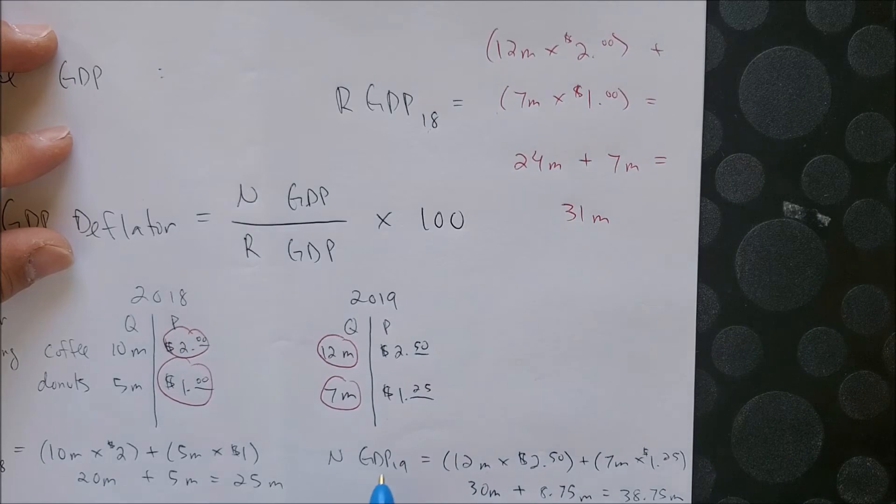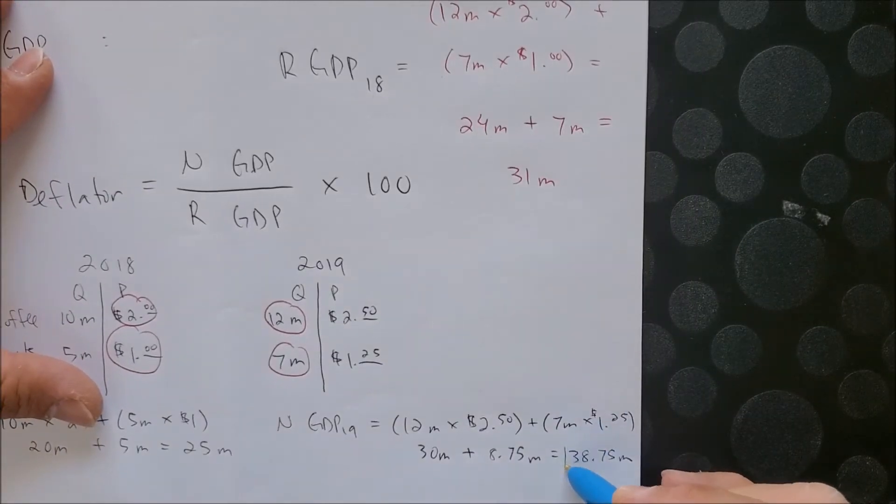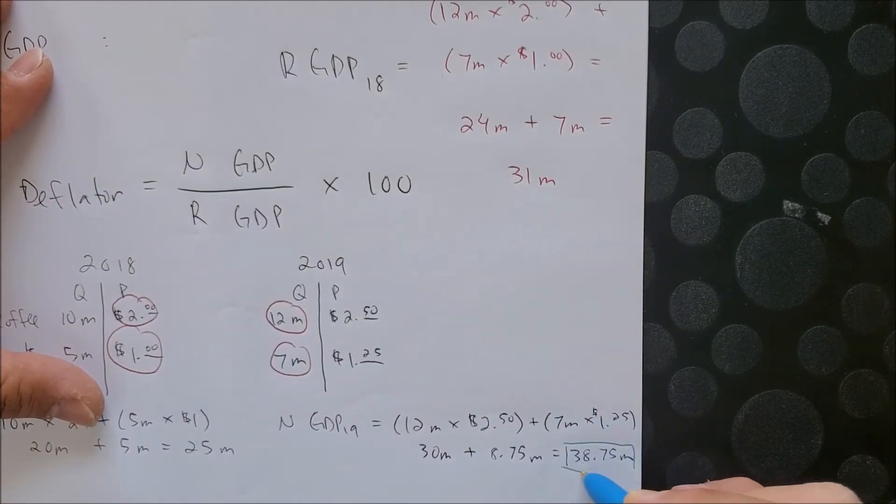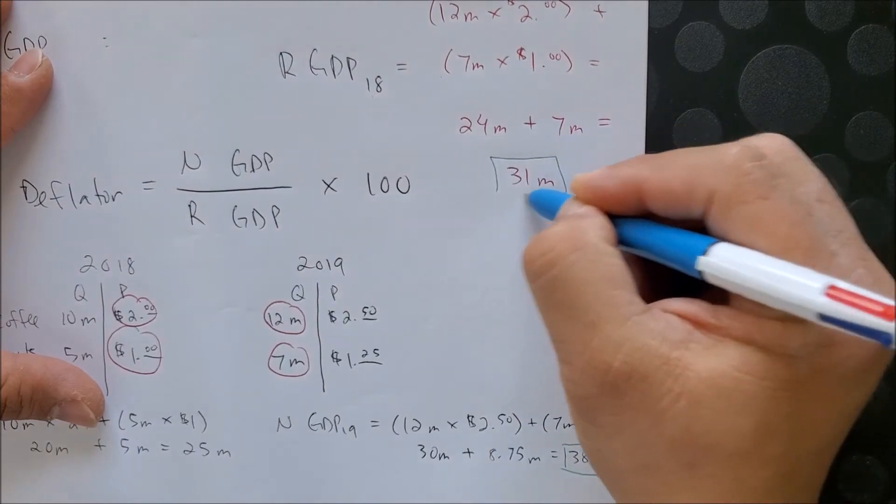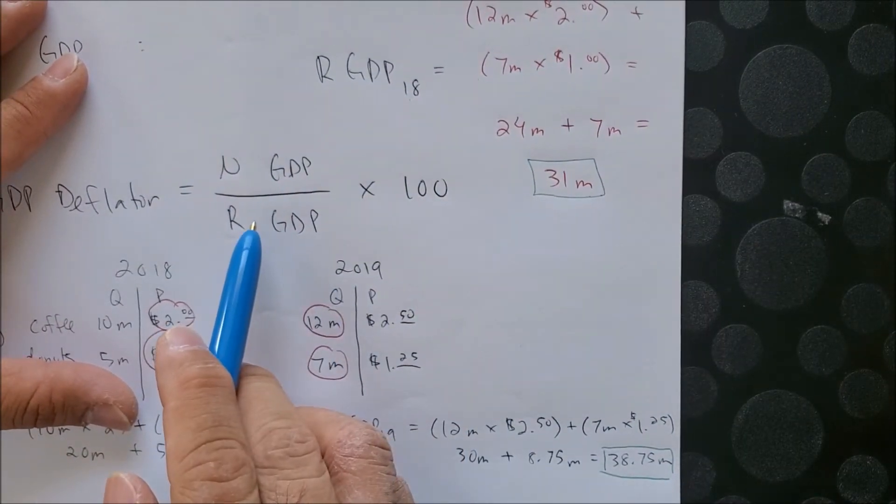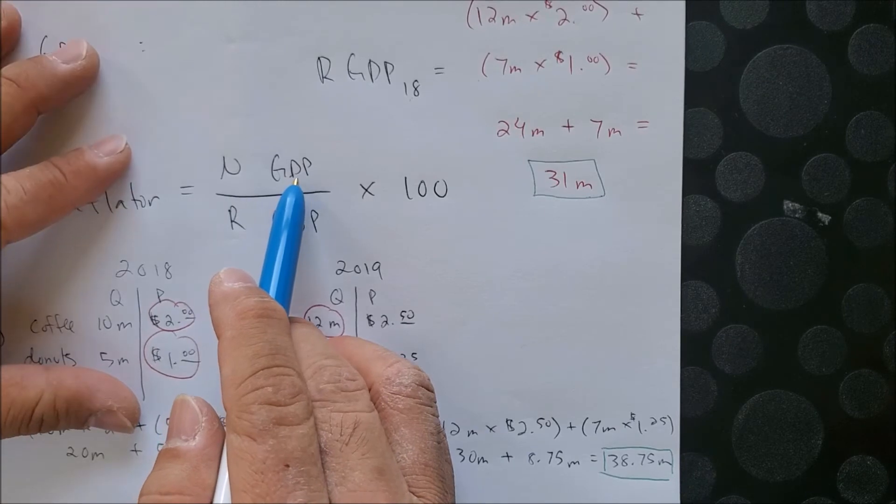Now what we can do is simply box the numbers that we need to make sure that we can plug in to our equation. Nominal GDP, which is the current year 2019, is 38.75.